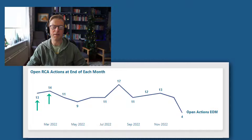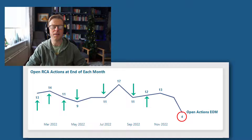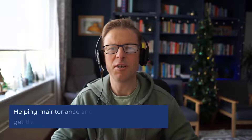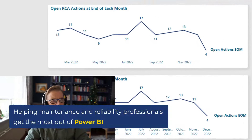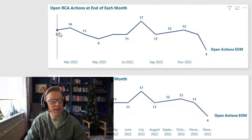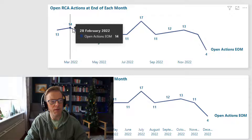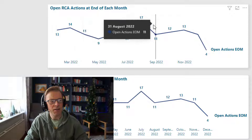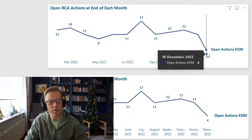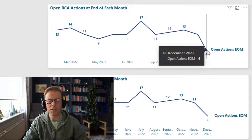In this video I'm going to be showing you how you can create a line chart that displays the number of open actions at the end of each month. Plus for the current month it's going to show you the number of open actions for the most recent date. This is Jason from Effective Dashboards, helping maintenance and reliability professionals get the most out of Power BI.